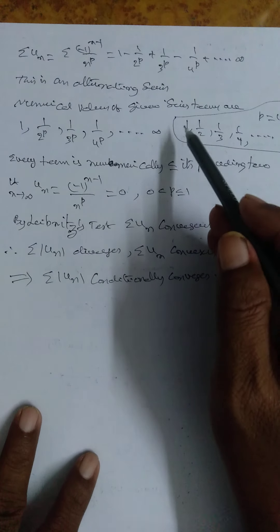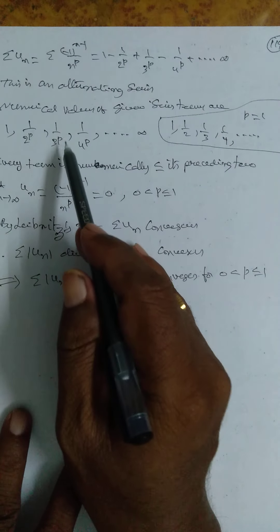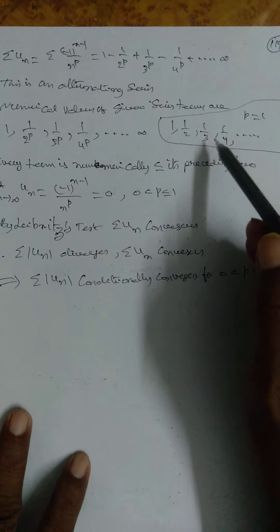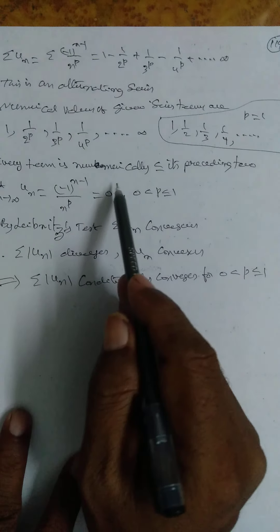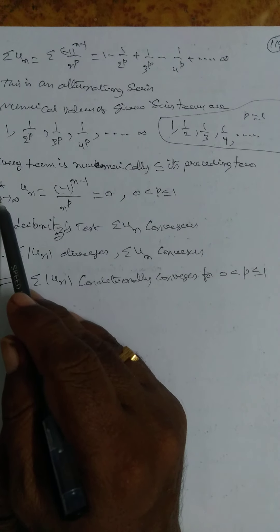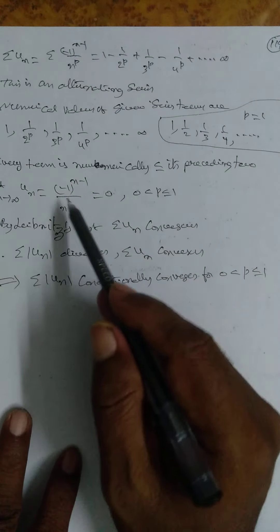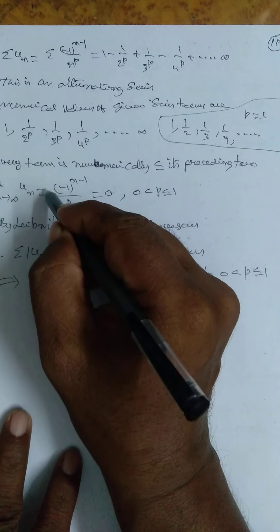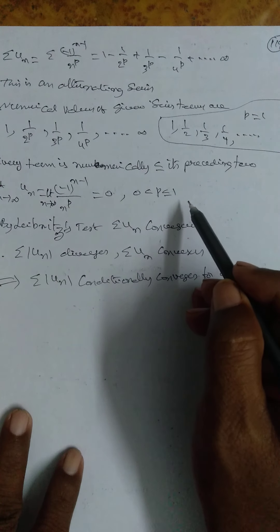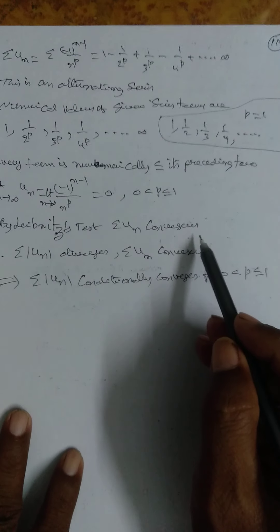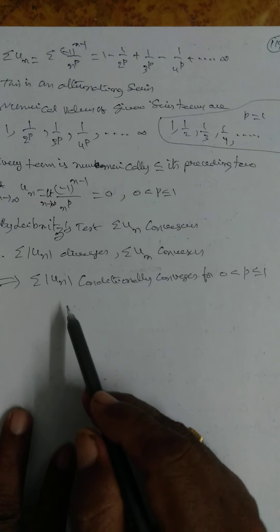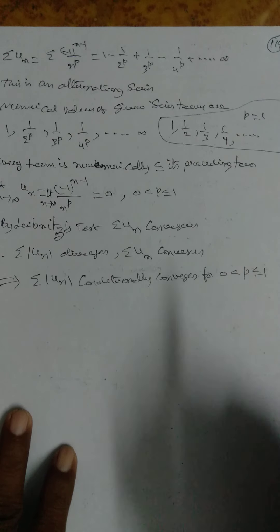Numerical values of the given series terms are 1, 1/2^p, 1/3^p, 1/4^p. For example, take p=1: we get 1, 1/2, 1/3, 1/4. Clearly every term is numerically less than or equal to its preceding term — first condition is satisfied. For the second condition of the Leibniz test: lim(n→∞) u_n = lim(n→∞) (-1)^(n-1)/n^p = 0, for 0 < p ≤ 1. By Leibniz test σu_n converges. Therefore σ|u_n| diverges and σu_n converges, implying σu_n conditionally converges for 0 < p ≤ 1.